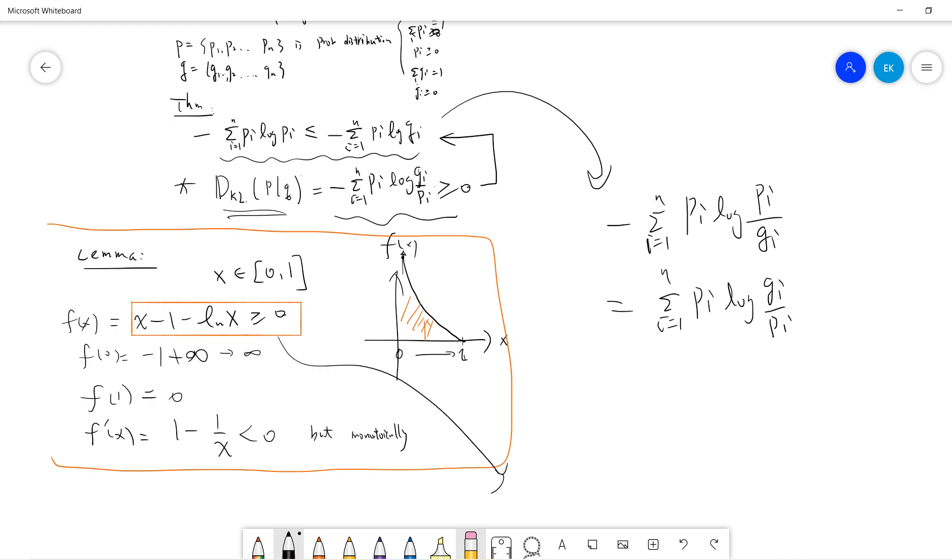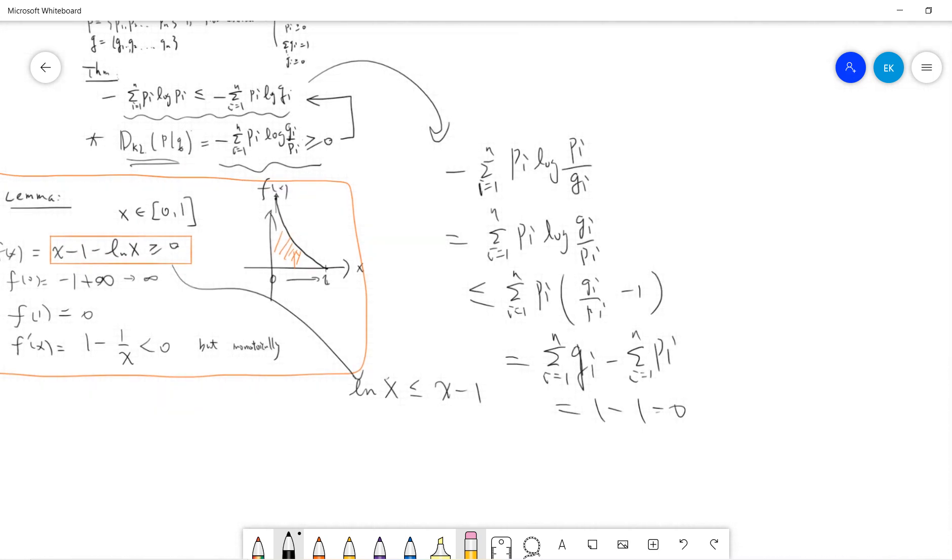The lemma tells us that ln(x) is less than x minus 1. So we get less than sum from i=1 to n of Pi times (Qi/Pi - 1). This is summation of Qi minus summation of Pi, which is 1 minus 1 equals 0, because they are probability distributions. So this tells you that sum Pi log(Pi/Qi) is less than zero.